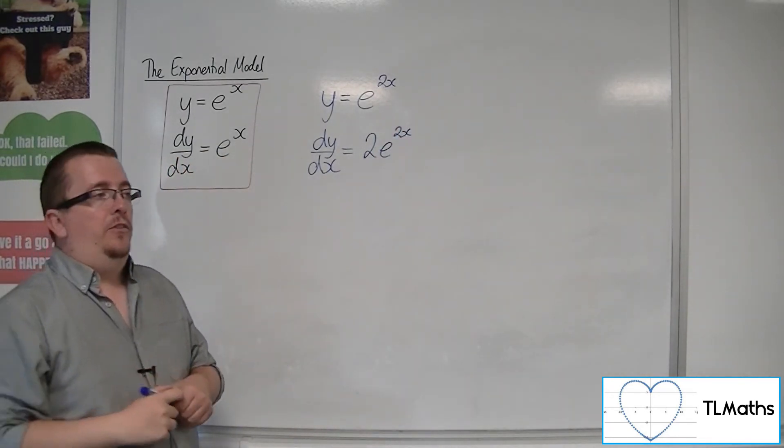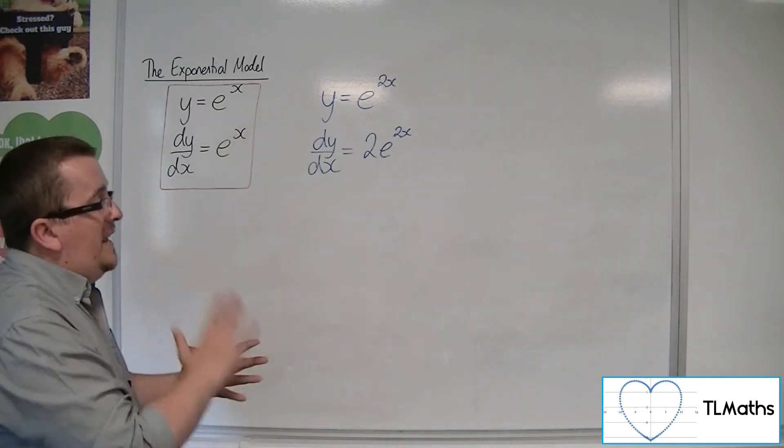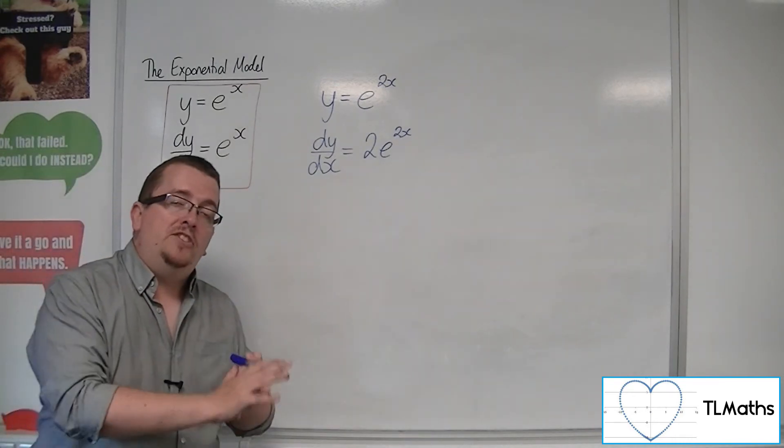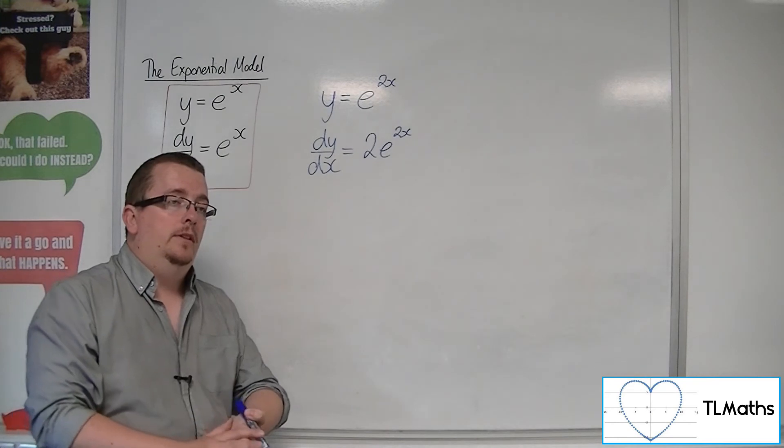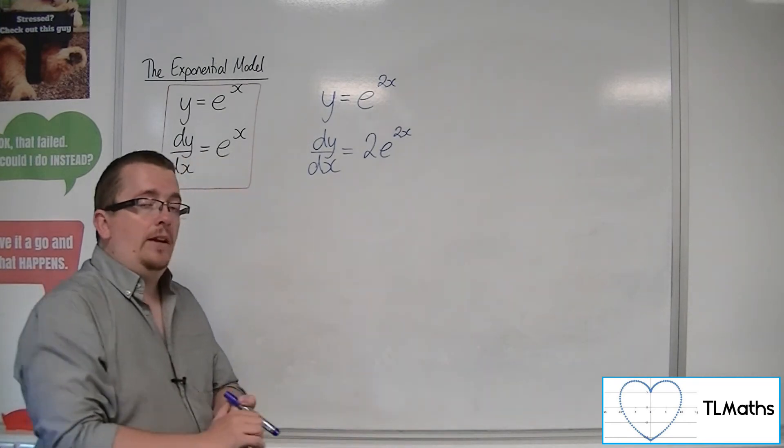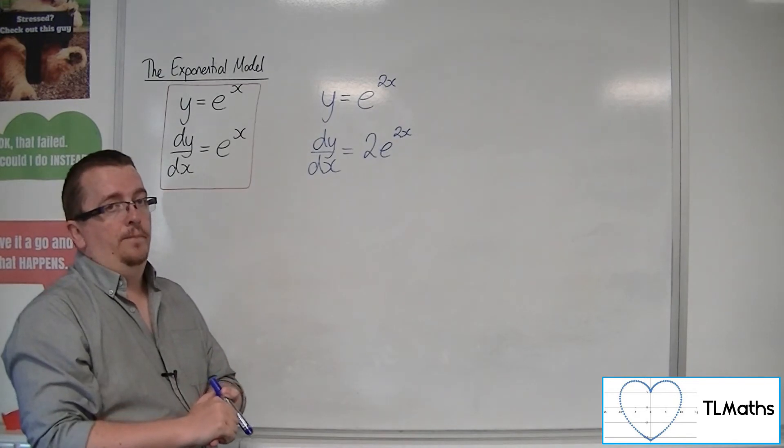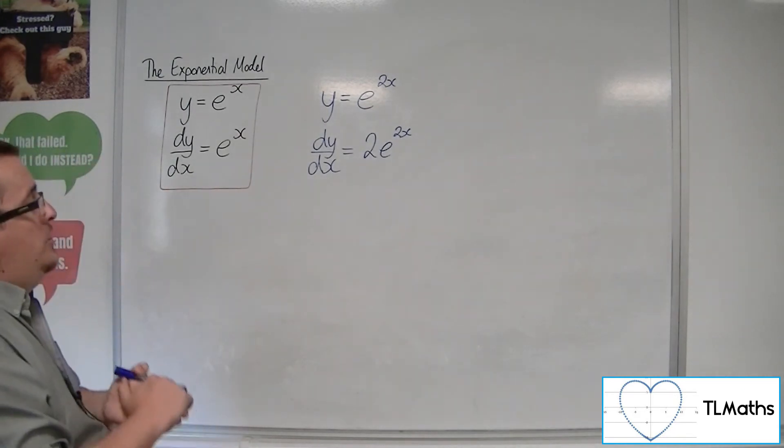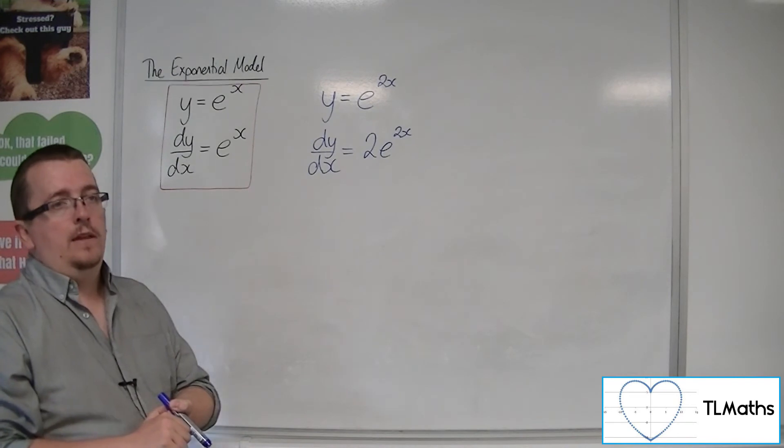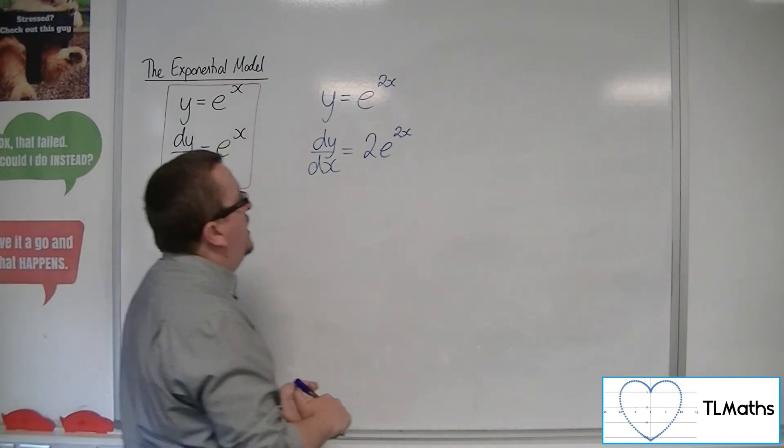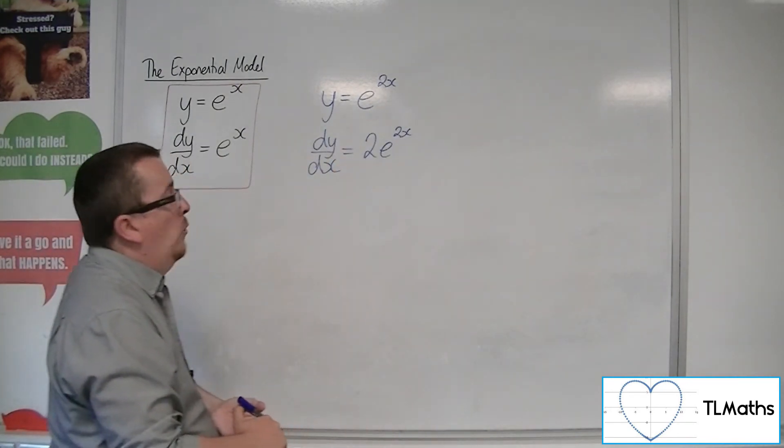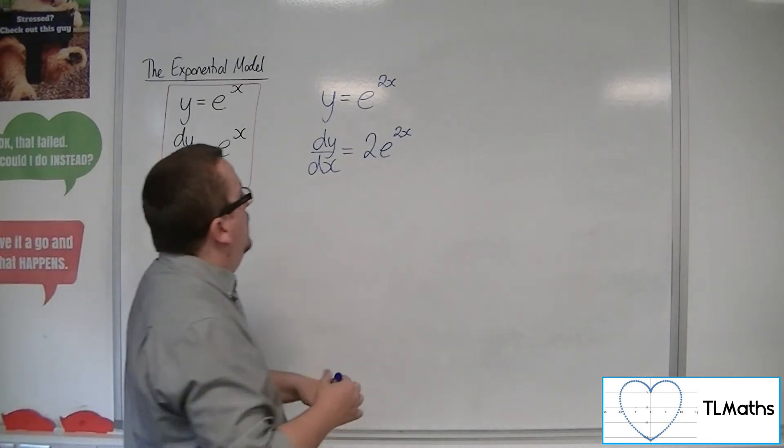So, you could guess that, well, if I had e to the 3x, it differentiates to 3e to the 3x. E to the 100x differentiates to 100e to the 100x. And of course, you can check this on Desmos and see how this works.